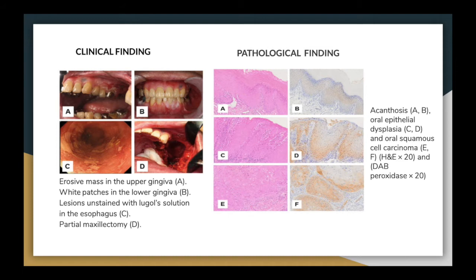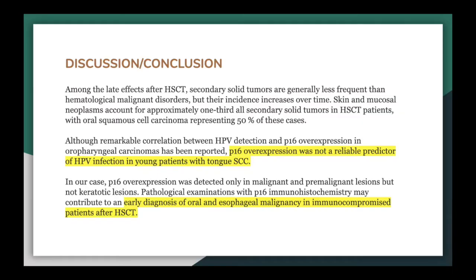In the clinical findings: A) there is an erosive mass in the upper gingiva; B) white patches in the lower gingiva; C) lesion stained with Lugol solution in the esophagus; D) partial maxillectomy. For the pathological findings: A and B show keratosis; C and D show oral epithelial dysplasia; and E and F show oral squamous cell carcinoma.